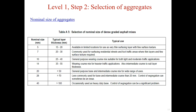For step 2, we also need to select the aggregates. The nominal size of the aggregate could be determined as a function of the layer thickness, or the layer thickness could be selected on the basis of the nominal size required for a particular application. A guide to selection of layer thickness and nominal size is shown in the table here. For example, if the nominal size of the dense graded asphalt mix is 40 mm, then the layer thickness has to be greater than 100 mm.